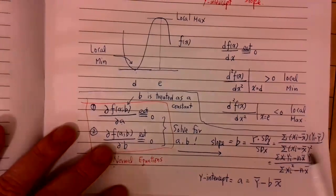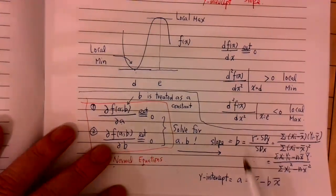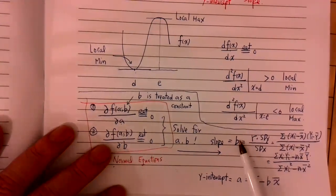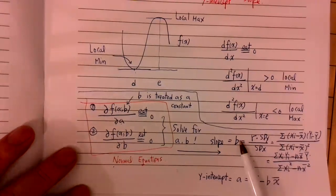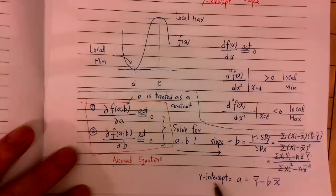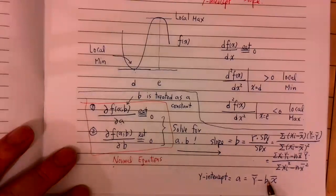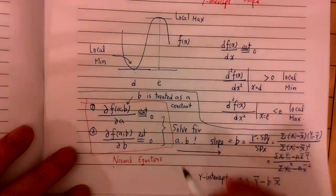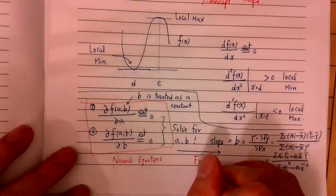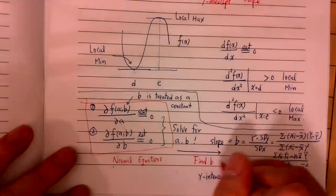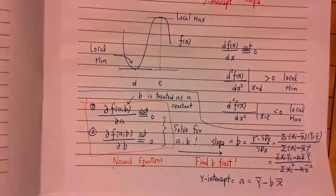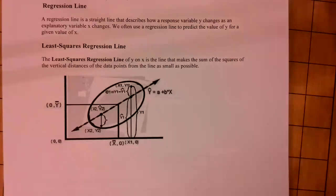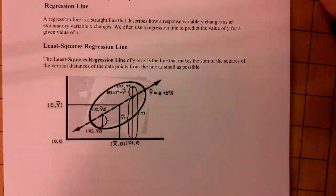One more question: in order to determine B and A, which one do you find first? The answer is you need to find B first, because in finding A you need to know what B is. So you want to find B first. Please flip to the next page.